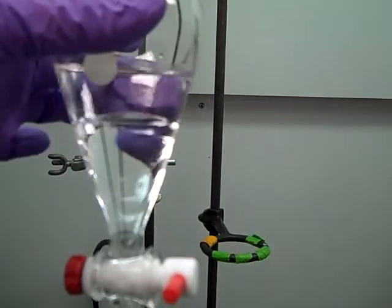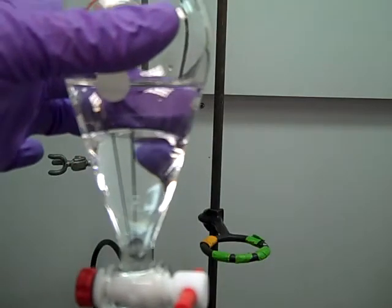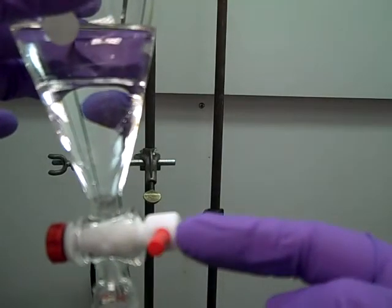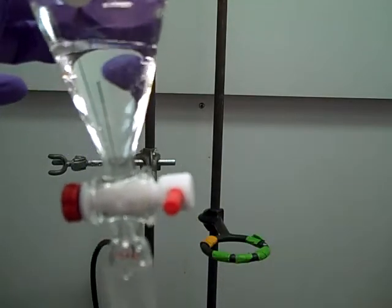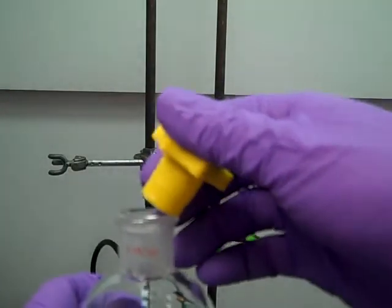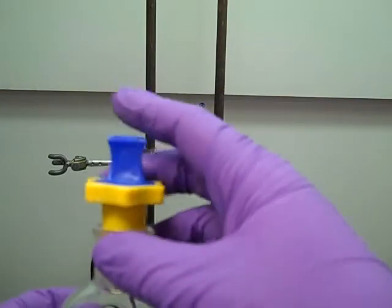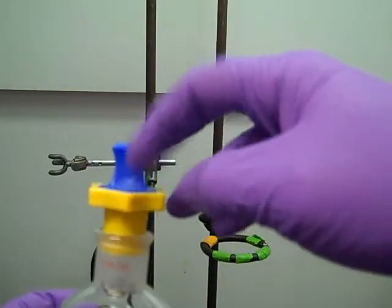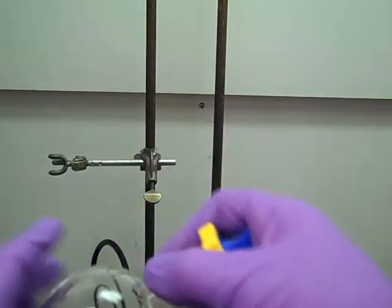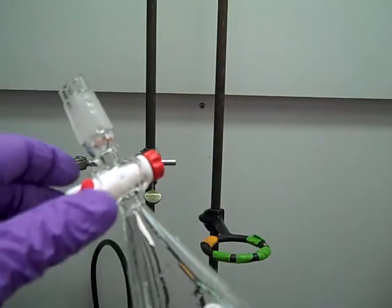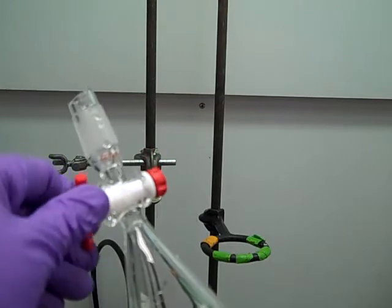All right, so we're going to go ahead and start doing our extraction. We've got our two layers inside the separatory funnel. Before we added it, we made sure that our stopcock was closed so that nothing spilled out the bottom. And then first thing we need to do to start the extraction process is firmly place the cap on top. So at this point, you want to make sure this is firmly sealed and then turn the separatory funnel over and open up the stopcock.